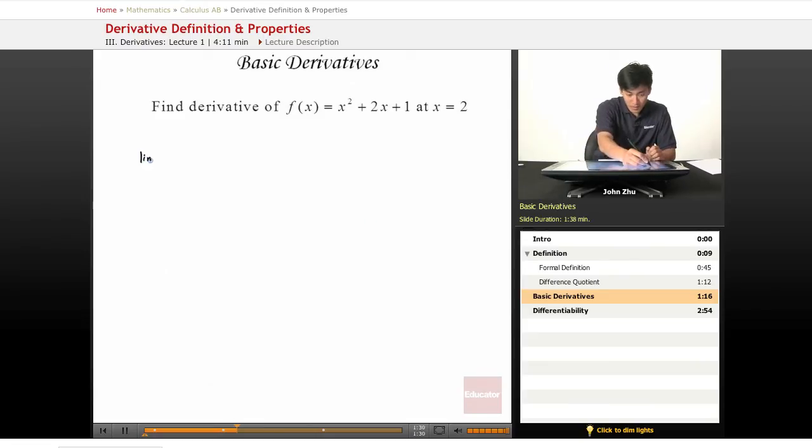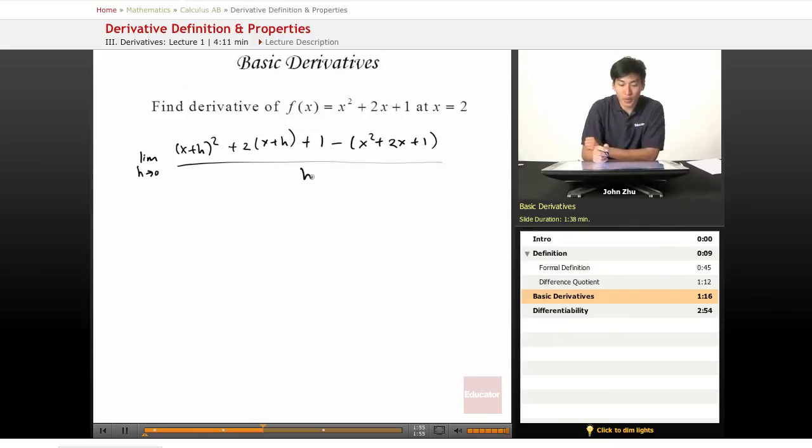which is the limit as h approaches 0, x plus h squared plus 2x plus h plus 1 minus x squared plus 2x plus 1 over h. So we see that x plus h term here and 2 times x plus h here and minus this f of x term.